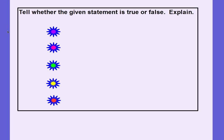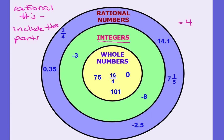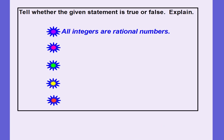We're going to tell whether each statement is true or false — use your Venn diagram to help. First: 'All integers are rational numbers.' Looking at my Venn diagram, the integers are included in the rational number circle, so they are also considered rational numbers. That one is a true statement.